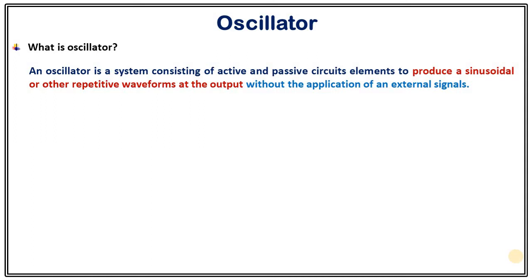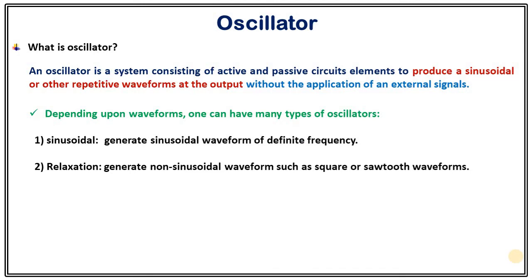From the definition it's very clear that depending upon waveforms one can have many types of oscillator like sinusoidal oscillator which generates sinusoidal waveform of definite frequency or relaxation oscillator which generates non-sinusoidal waveforms such as square waveform or sawtooth waveform.